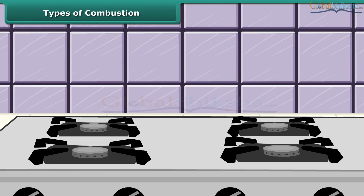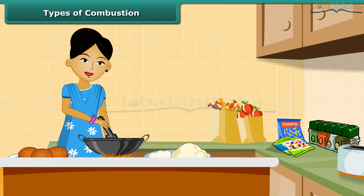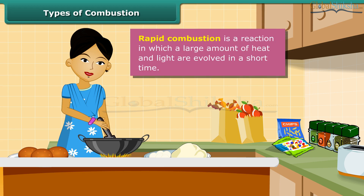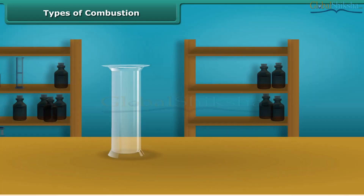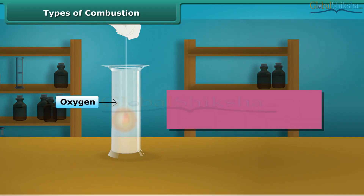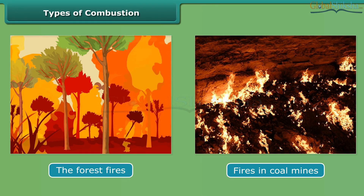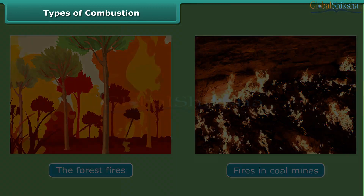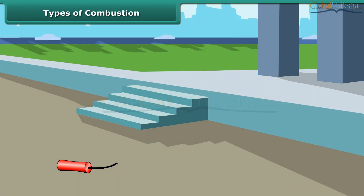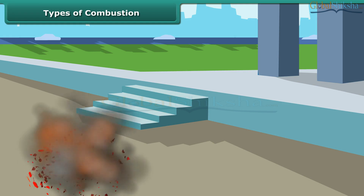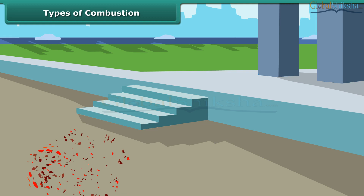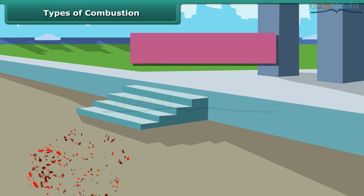Let us now look at types of combustion. LPG burns quickly producing a lot of heat — this type is called rapid combustion. When white phosphorus is left in the open for some time, it catches fire on its own — this is called spontaneous combustion. Other examples of spontaneous combustion include forest fires and fires in coal mines. When a cracker burns, it produces a large amount of heat, light and sound — this type of combustion is called explosion.